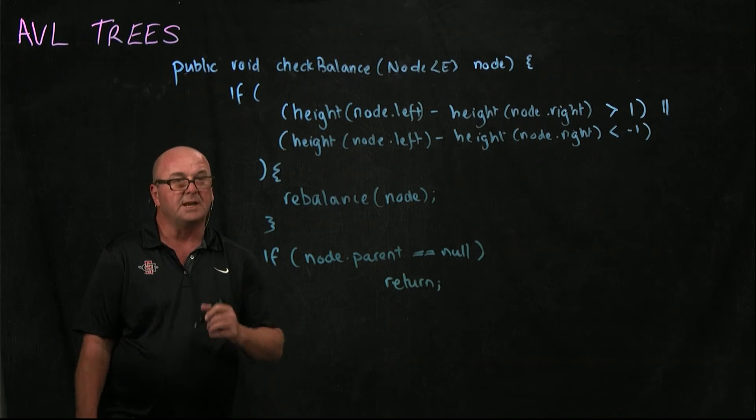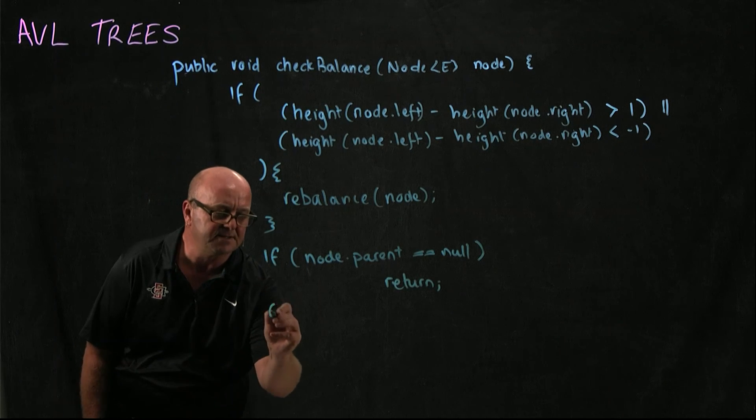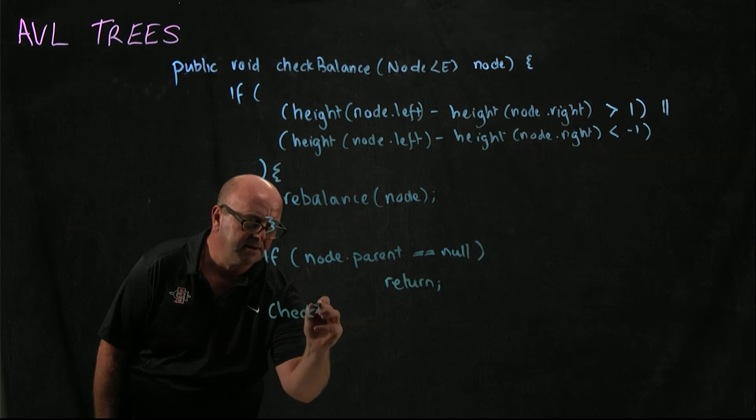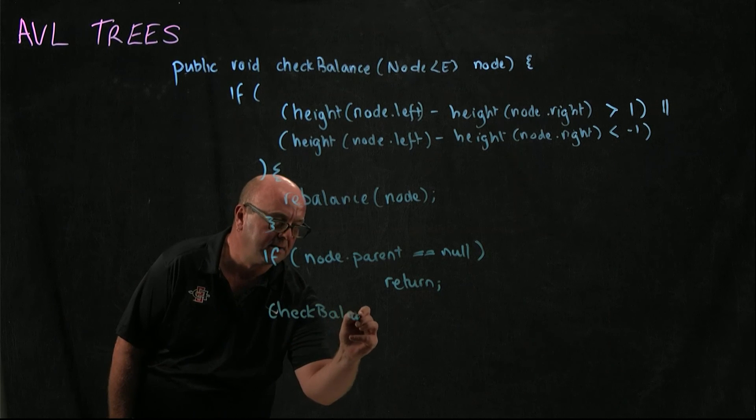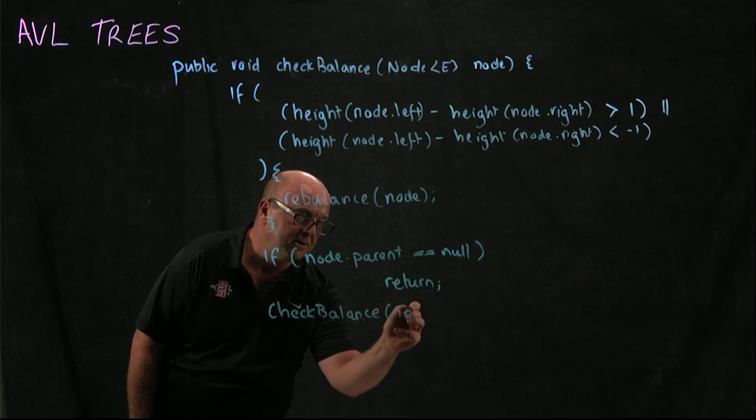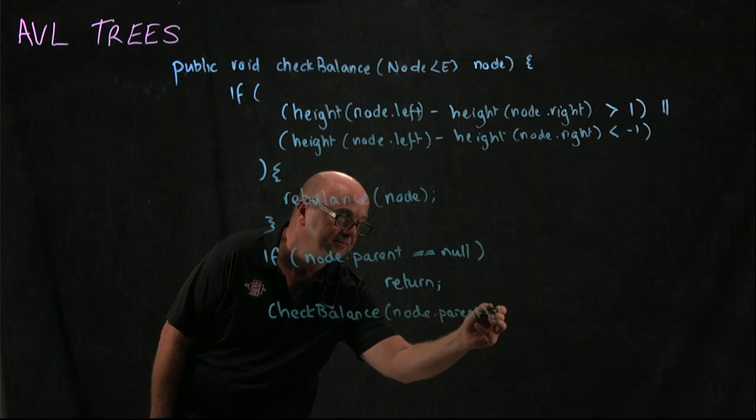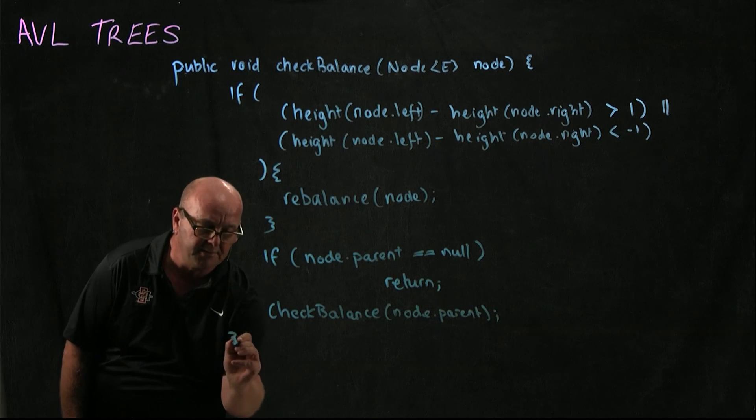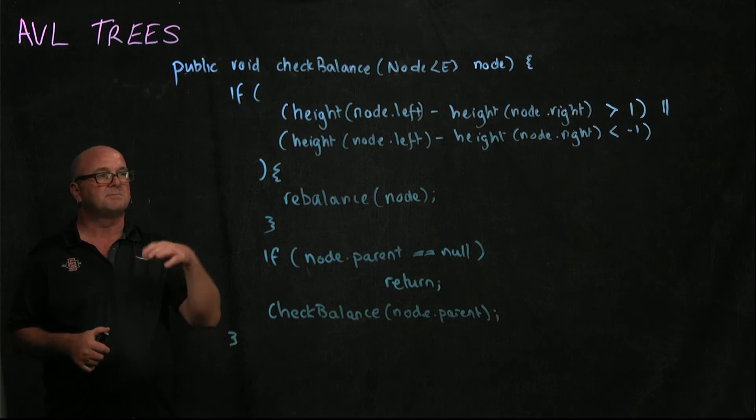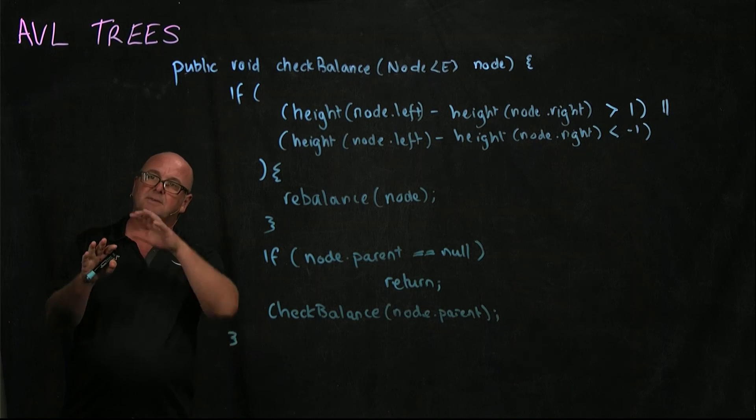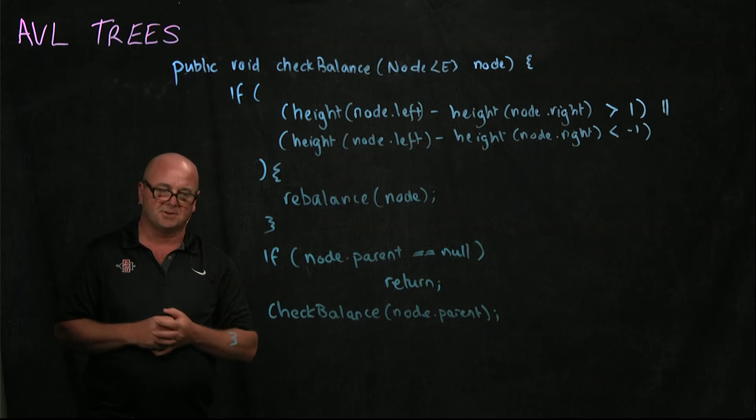Otherwise, we need to recurse and call check balance on node.parent. That'll move us up the tree until we get to the root. At each point, we'll test height of the left, height of the right, and make sure that the tree is balanced.